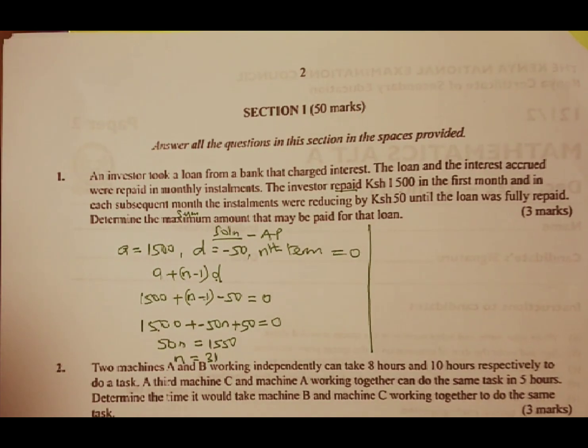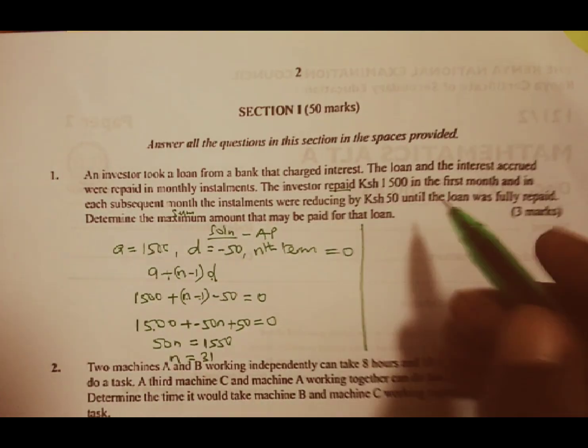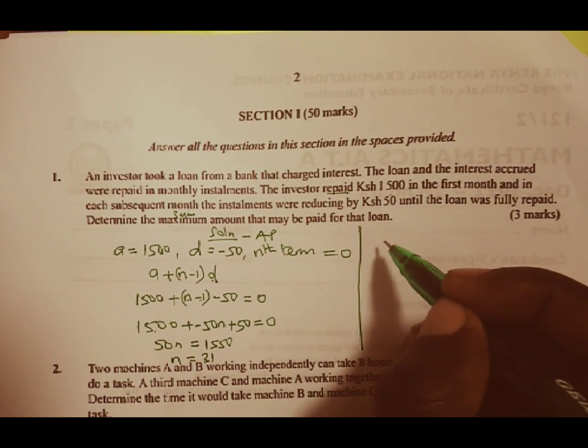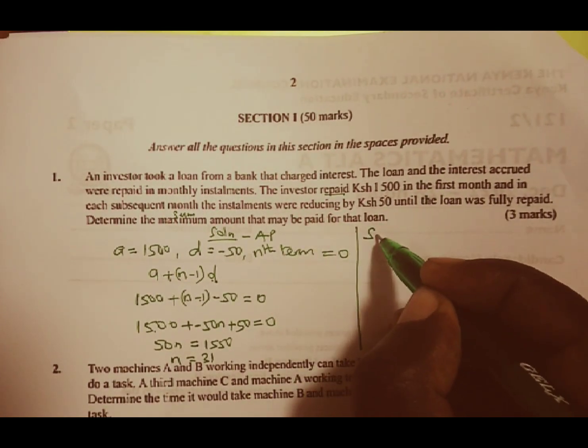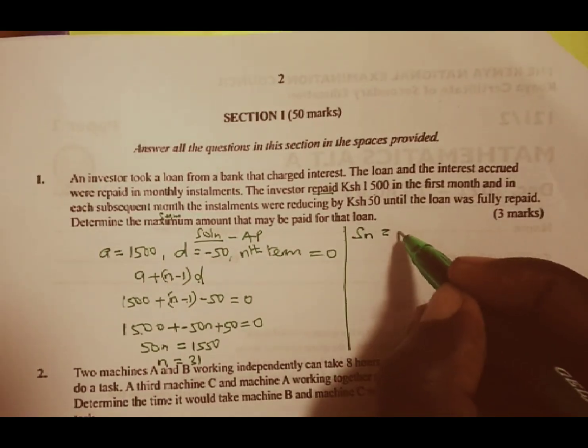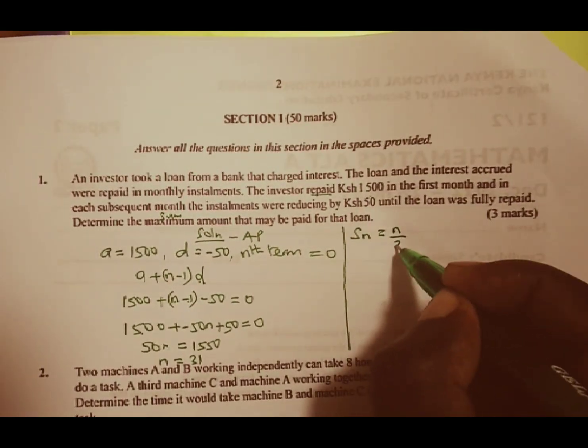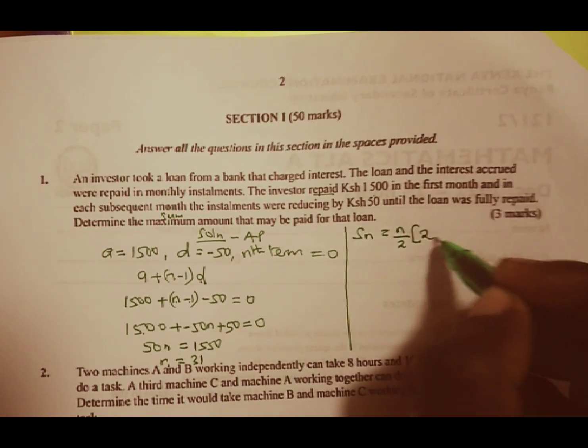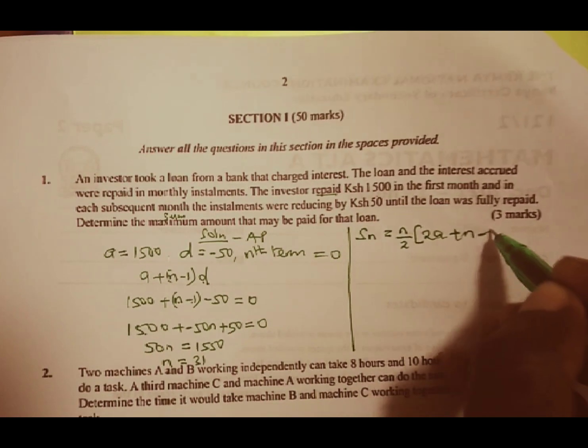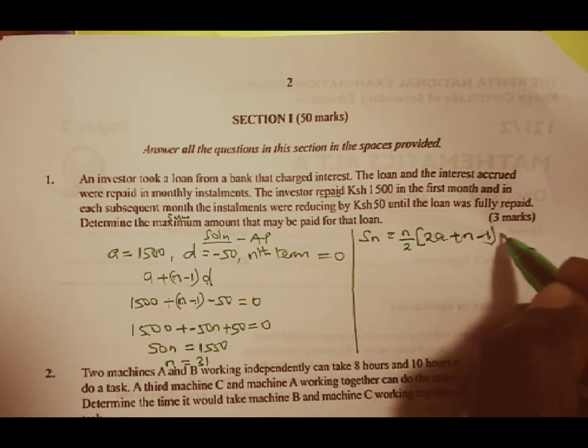Once we have the number of terms, we can now move forward and calculate the sum. And we know since this is an AP, sum of N terms is given by N divided by 2 into 2A plus (N minus 1) multiply by D.